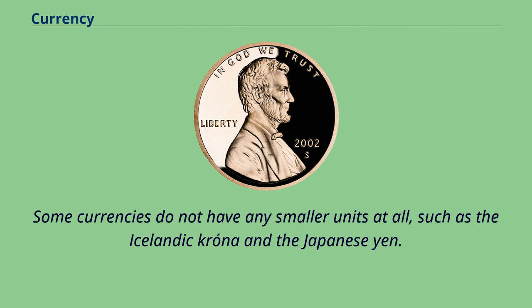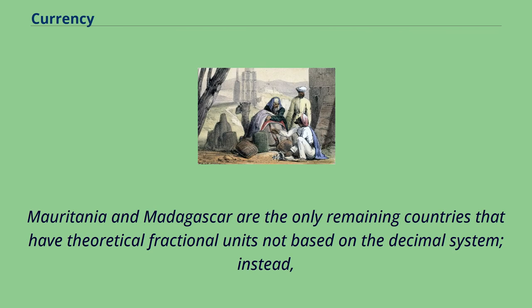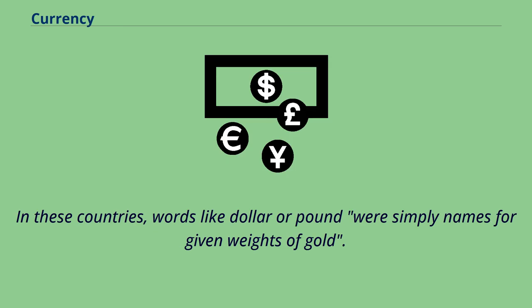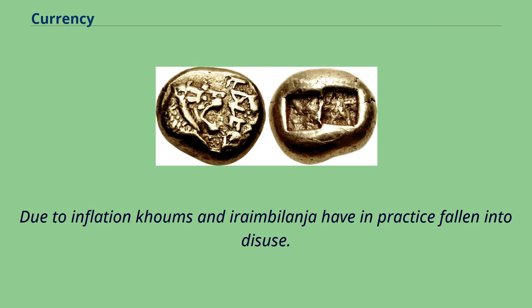Mauritania and Madagascar are the only remaining countries that have theoretical fractional units not based on the decimal system. Instead, the Mauritanian ouguiya is in theory divided into five khoums, while the Malagasy ariary is theoretically divided into five iraimbilanja. In these countries, words like dollar or pound were simply names for given weights of gold. Due to inflation, khoums and iraimbilanja have in practice fallen into disuse.